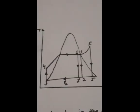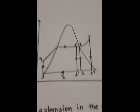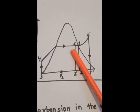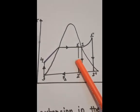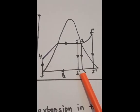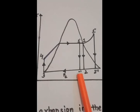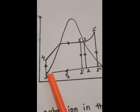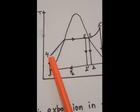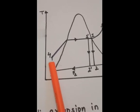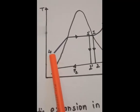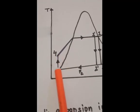In the TS diagram there is a relation between temperature and entropy. From 1 to 2, the temperature decreases as heat is converted into mechanical work of the turbine. In 2 to 3, the entropy decreases and temperature remains constant. From 3 to 4, the pump work is done and the pressure increases.